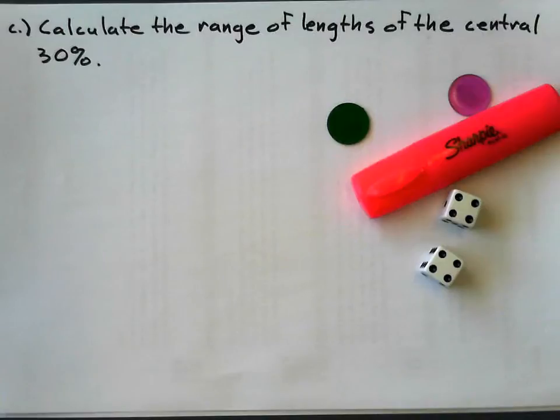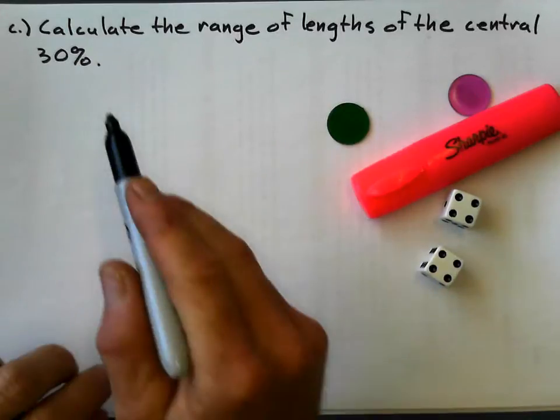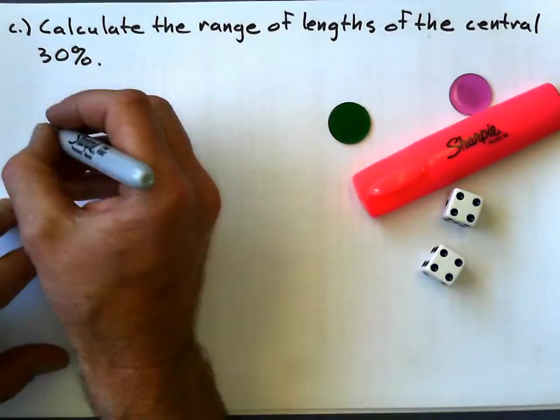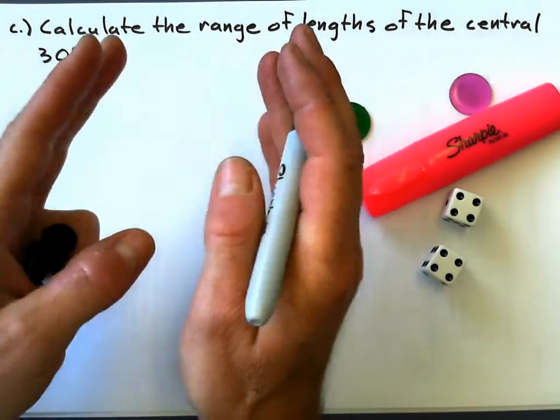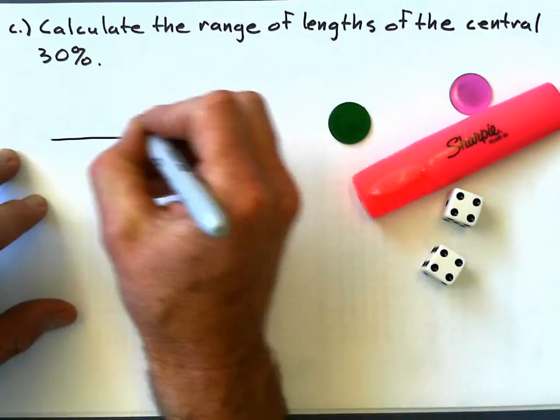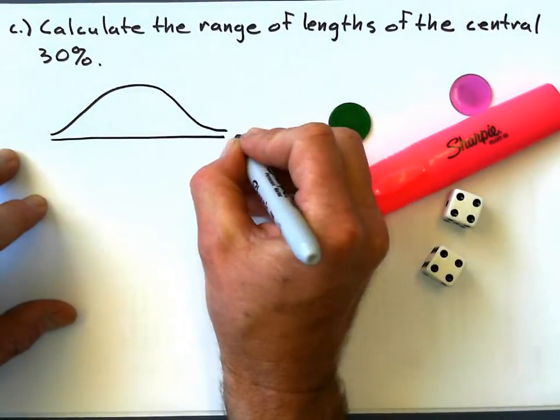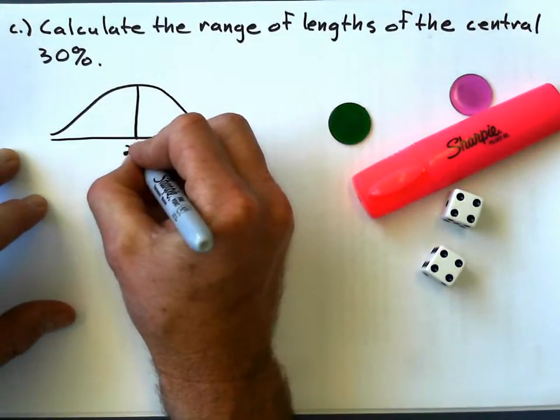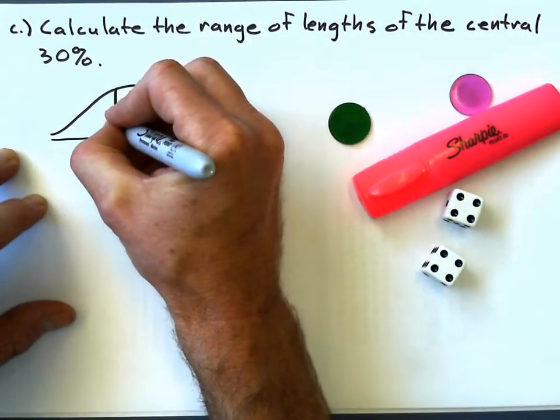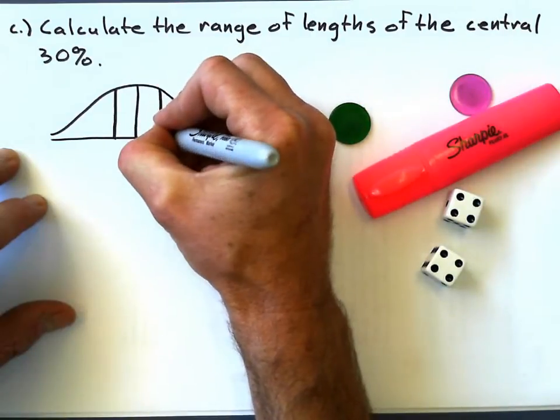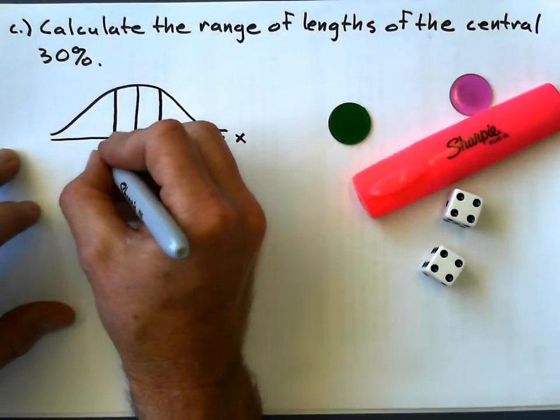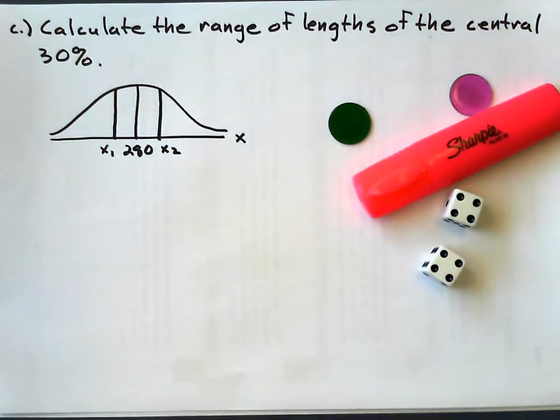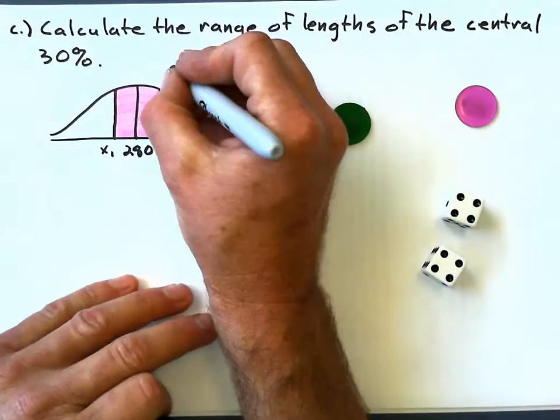Do we have time for one more? Let's try it. Let's take a look at this final one. Calculate the range of length of the central 30%. What does that central 30% look like? It's symmetrical. Drawing my X curve. My mean is still going to be 280. And my central 30% is going to be 15% on this side, and 15% on this side. And I will have two X values. X1 and X2.